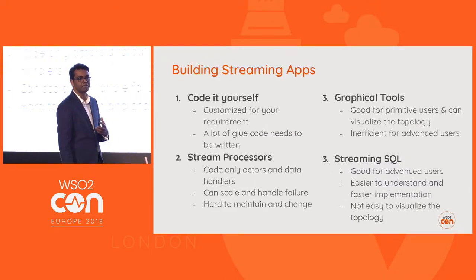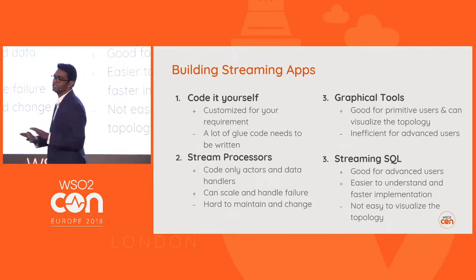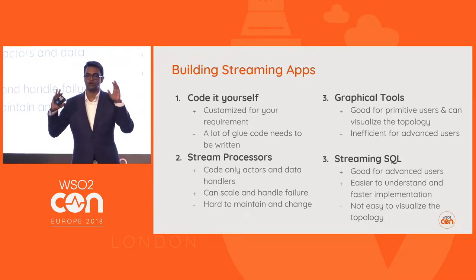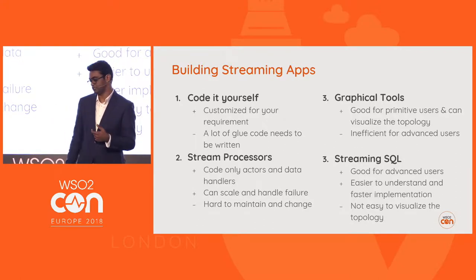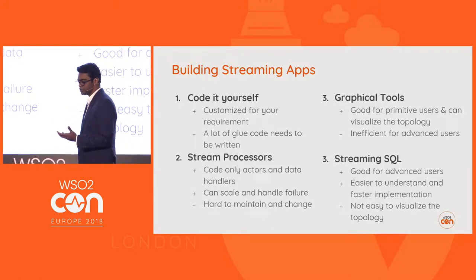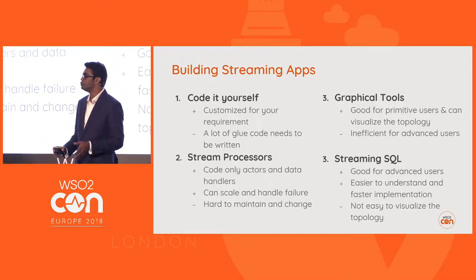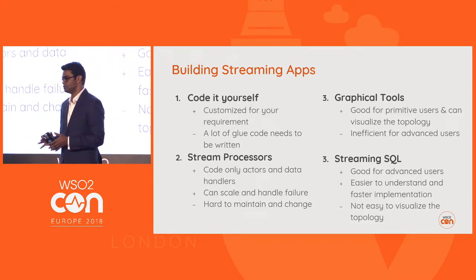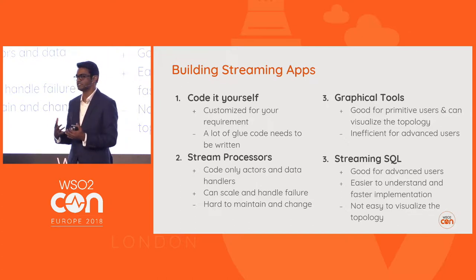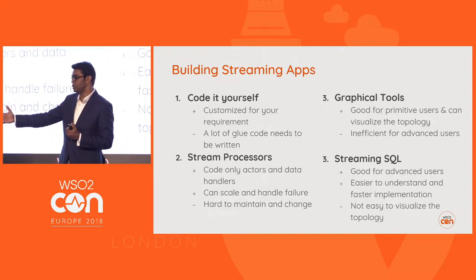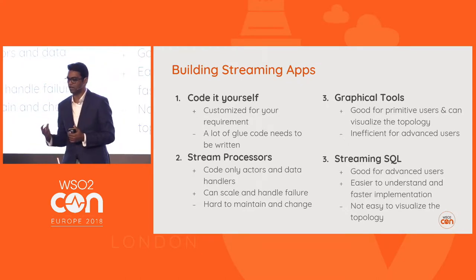If you want to build a streaming application, there are many ways. If you try to code by yourself, you can customize your application well, but you have to do a lot of boilerplating and glue code — writing connectors, processing logic, window aggregations — it's a lot of work. There's not one size that fits everyone.